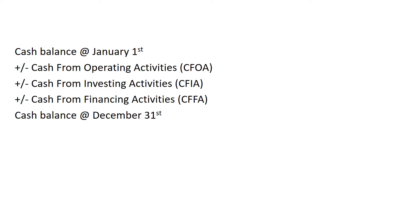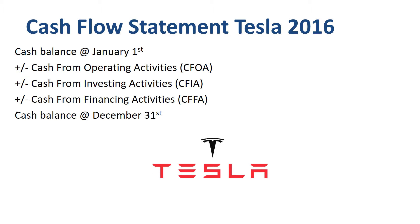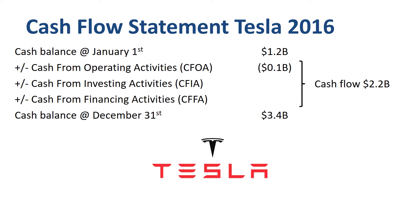We will review Tesla's cash flow statement for 2016. Tesla started the year with $1.2 billion in cash and cash equivalents, and ended the year with $3.4 billion. The total cash flow was therefore a net cash inflow of $2.2 billion. Now where did that $2.2 billion in cash flow come from? Cash from operating activities was an outflow of $100 million, or $0.1 billion.